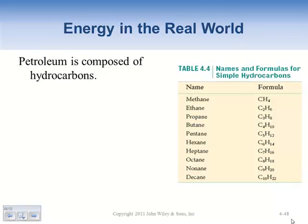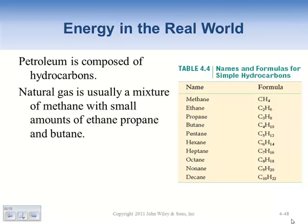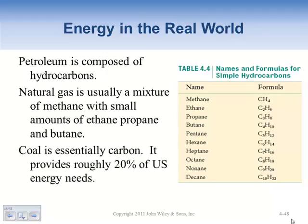Products of petroleum are hydrocarbons. Natural gas is a mixture of methane, propane, and some butane - that's what's in your gas stove. Methane, ethane, propane, and butane are all gases; as you go higher in complexity they become liquids closer to the liquid fuels we use. Coal, which is basically carbon, provides about 20% of US energy needs. The two major energy sources we use are petroleum (a hydrocarbon) and coal (close to pure carbon).